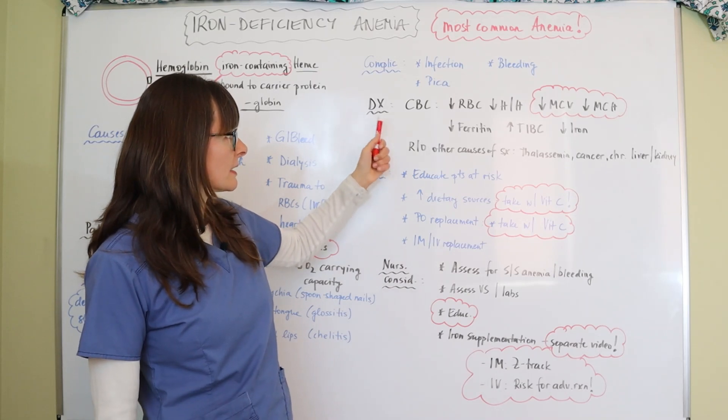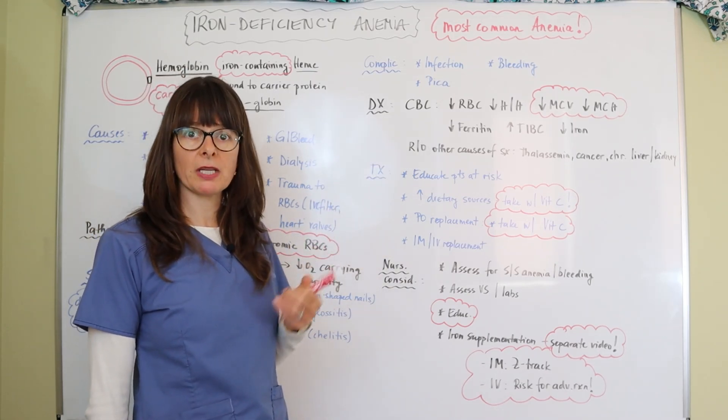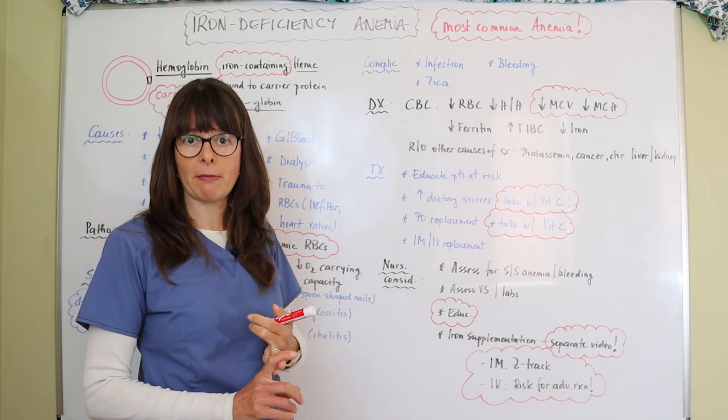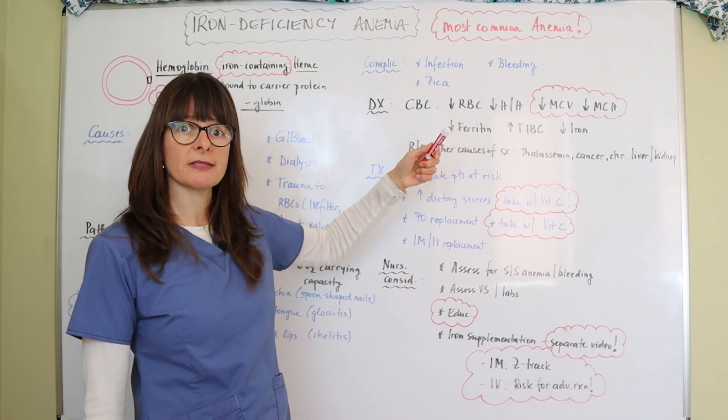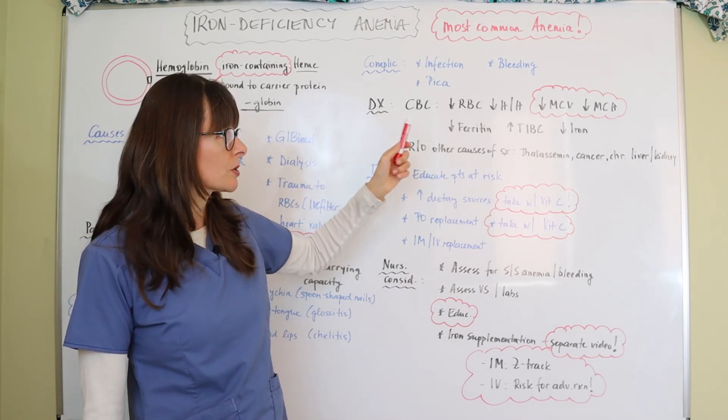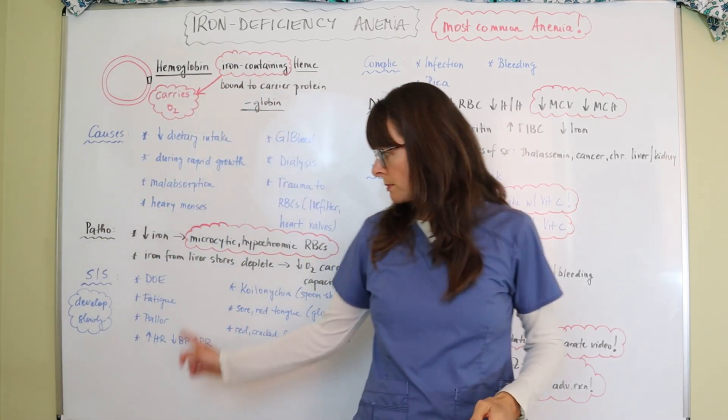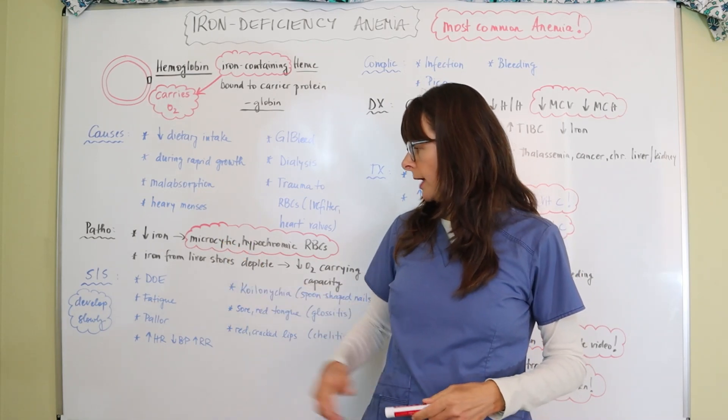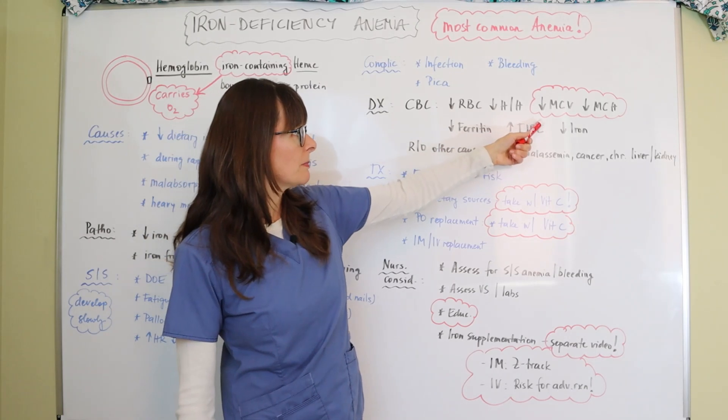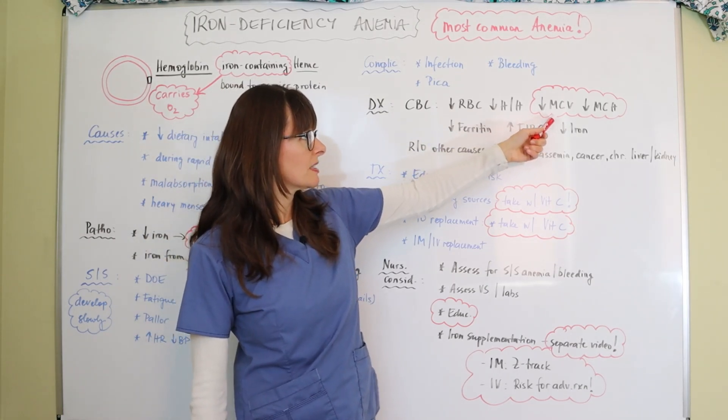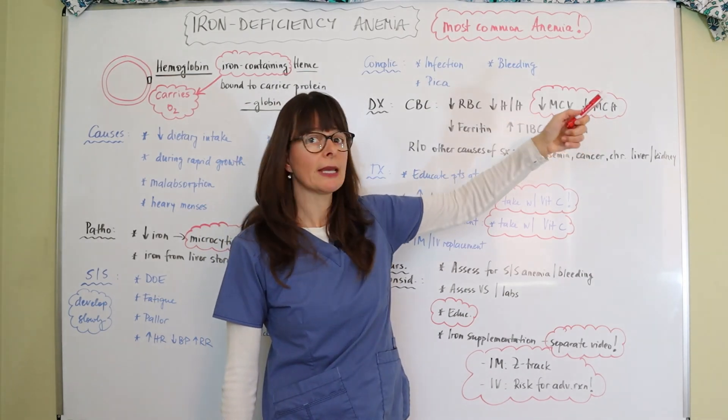For diagnostic tests, typically on a CBC, on a complete blood count, it is first detected that the red blood cells and the hemoglobin and hematocrit are low. Then we also look into the red blood cell indices and I have a separate video that goes more into explaining these. Because we said we have those microcytic and hypochromic, so small and pale red blood cells, it'll show up in the CBC as a low MCV, mean corpuscular volume, and the low MCH, mean corpuscular hemoglobin.